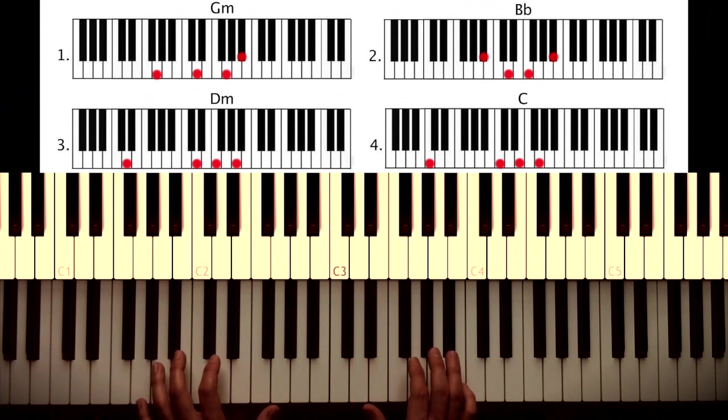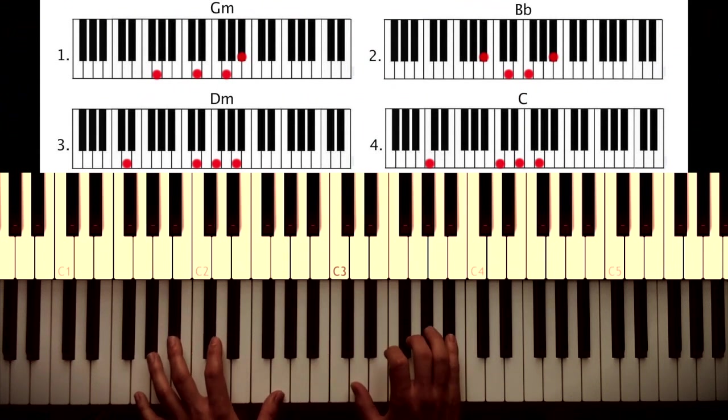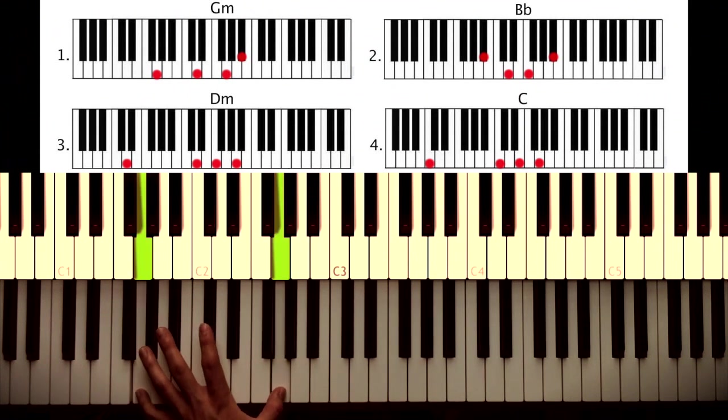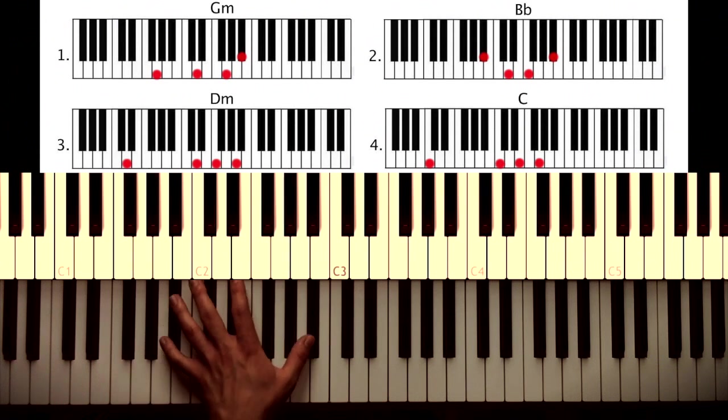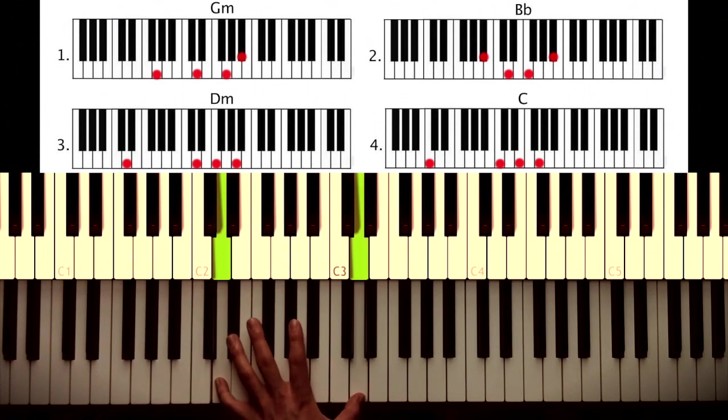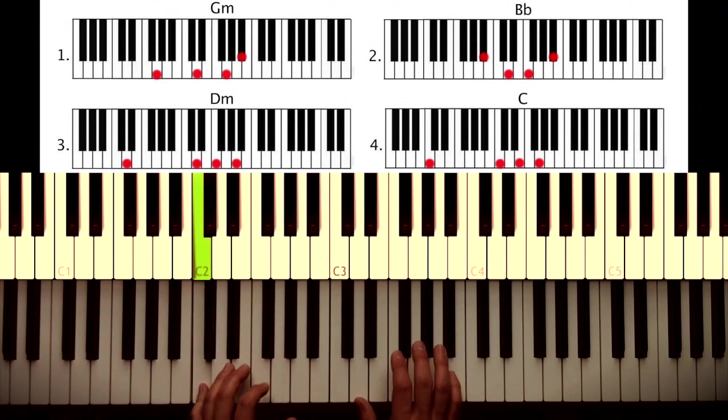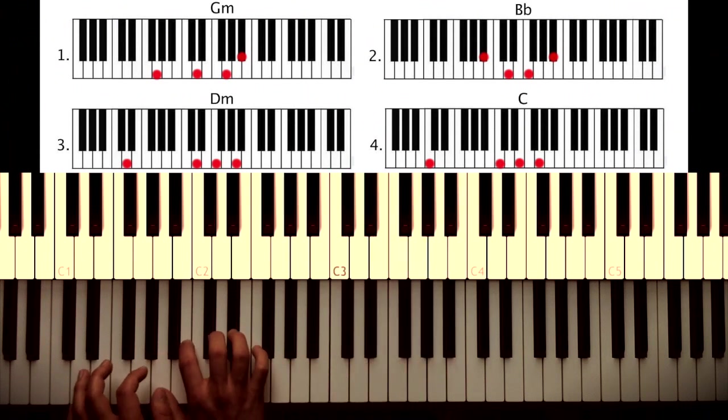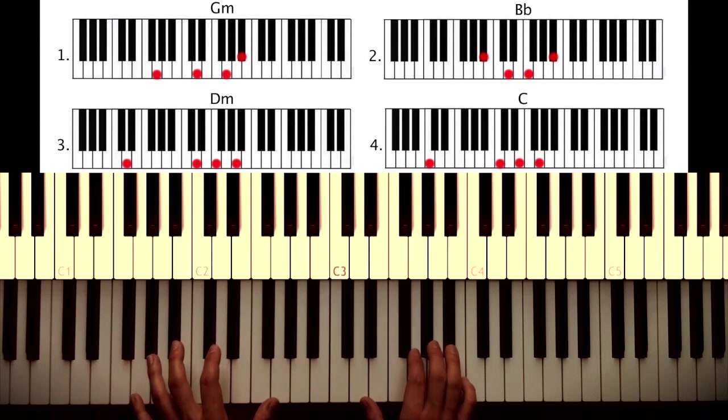Okay, then we move on to the chorus which is kind of exactly the same thing voicing-wise. Only thing is that I suggest you now play octaves in your left hand. So same chord progression, right? G, B flat, D, C. Right hand same voicings, only one octave up now. And then we get this pattern.